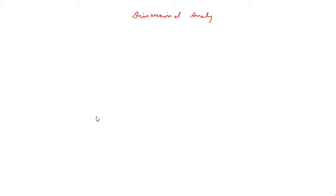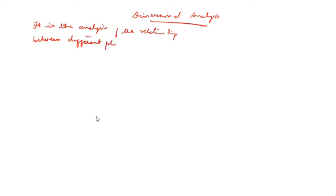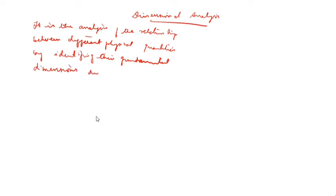Today we are going to learn about dimensional analysis. Dimensional analysis is the analysis of the relationship between different physical quantities by identifying the fundamental dimensions such as mass, time, temperature, length, and current.